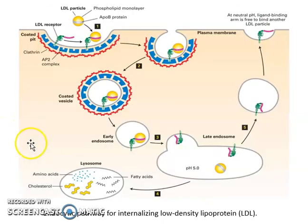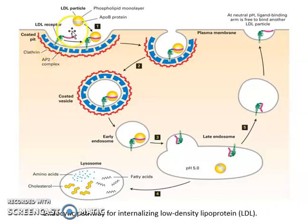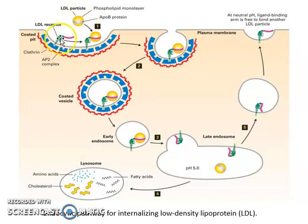Now, coming to the endocytic pathway for internalizing LDL particles. In the first step, the LDL particle is taken up by the receptor on the cell surface. The LDL receptor has a transmembrane domain, a cytosolic domain, and an extracellular domain. The pink-colored ligand-binding arm binds to the LDL particle, and specifically to the apoB protein.